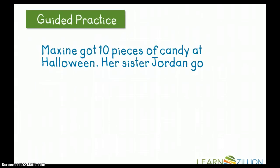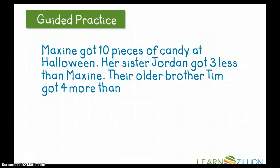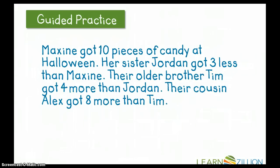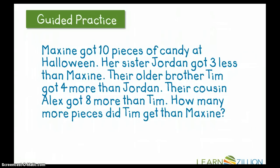Let's take a look at some guided practice. We're going to look at a similar problem. This time, instead of pencils, we have Halloween candy. So Maxine got 10 pieces of candy at Halloween. Her sister Jordan got 3 less than Maxine. Their older brother Tim got 4 more than Jordan. Their cousin Alex got 8 more than Tim. How many more pieces did Tim get than Maxine? Remember to draw a picture of each of the pieces of candy that each person got using all of the pieces of data in your problem.